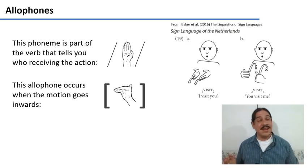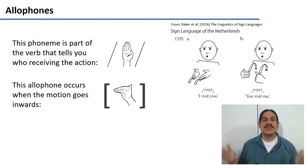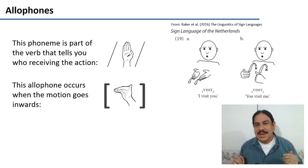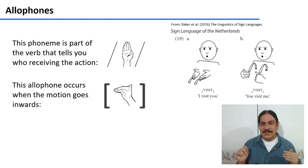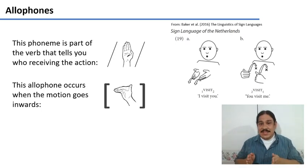Phonemes in sign languages have allophones. They have variations that depend on context. So for example, take a look at the diagram on the right. This is a fully conjugated verb in the sign language of the Netherlands, which means I visit you.